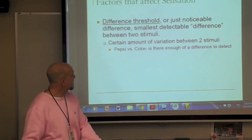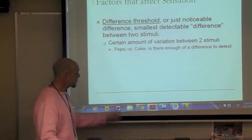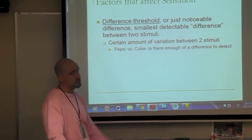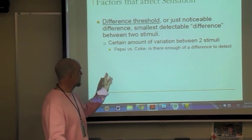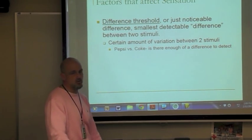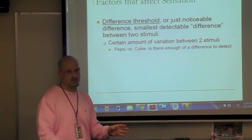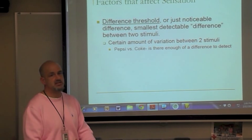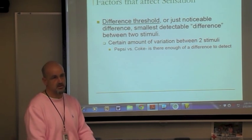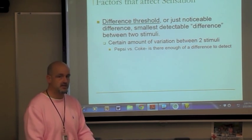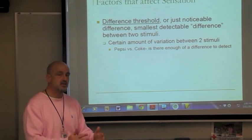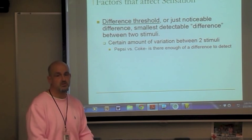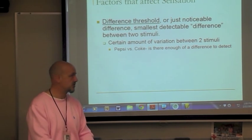Difference threshold — also called just noticeable difference — is the smallest detectable difference between two stimuli. An example is Pepsi versus Coke: there's not much difference between the two for you to detect. If you can tell the difference, it exceeds the difference threshold; if you can't, it doesn't.